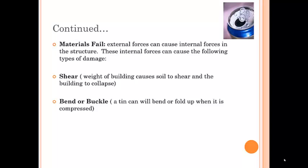Structures can bend or buckle. For instance, a tin can will bend or fold up when it is compressed. And with torsion, twisting can lead structures to break apart or become tangled.